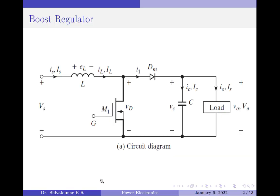So, to summarize — a boost regulator produces a higher average voltage at the output than the input. If we plot the instantaneous output voltage waveform, it would be 0 in mode 1 because the load and supply are disconnected, and it would equal Vs divided by (1 minus k), where k is the duty cycle, for mode 2. Since the maximum value of the duty cycle can be 1, the minimum average voltage at the output is equal to the supply voltage.